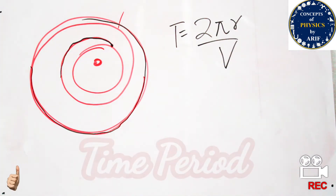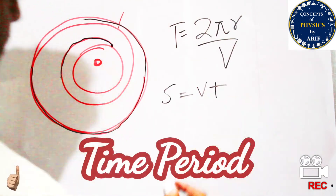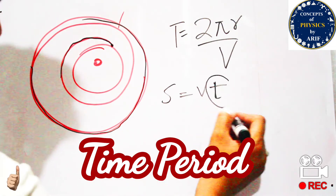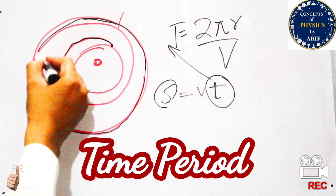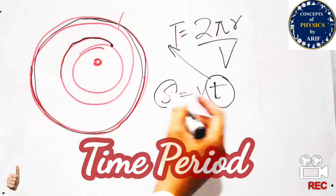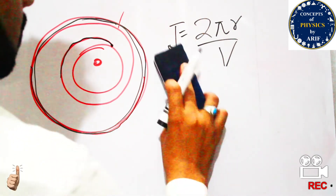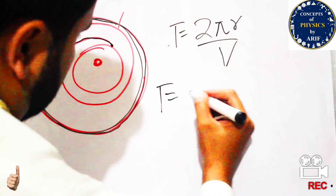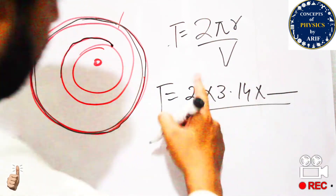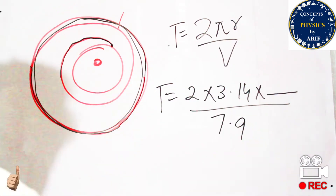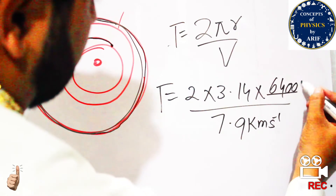This formula comes from s = v × t, where s is the total distance covered, which equals 2πr for one full circular orbit. So t = 2πr / v. Substituting: 2 × π (3.14) × r (6400 km) divided by the critical velocity of 7.9 km/s.